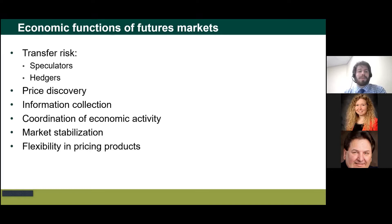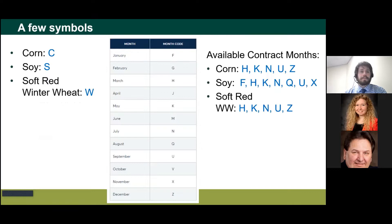Another economic function is market stabilization. There's no doubt prices go up and down, but without these markets there would be even more volatility. If you were on your own to find a buyer for your crop, there would be times you couldn't find one, leading to much more price variation — we see that in crops that don't have these types of markets. And lastly, all of this gives you flexibility in pricing your crop, opening up a suite of tools to reduce risk and hopefully get a good price.